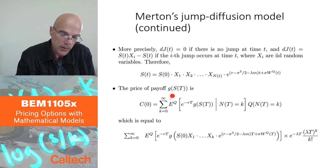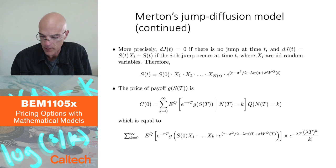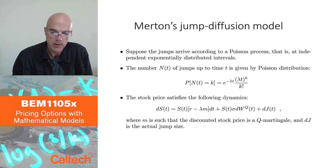You compute expected value of discounted payoff at maturity over all possibilities for the number of jumps. But then you have to weight every such expectation with the probability that indeed there were exactly k jumps up to maturity. And here you're doing it with the Q probability because everything is under Q.